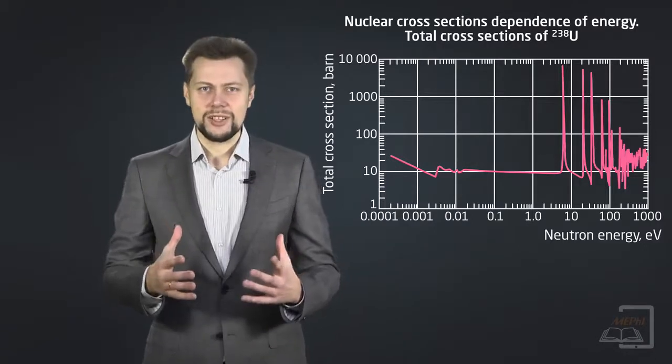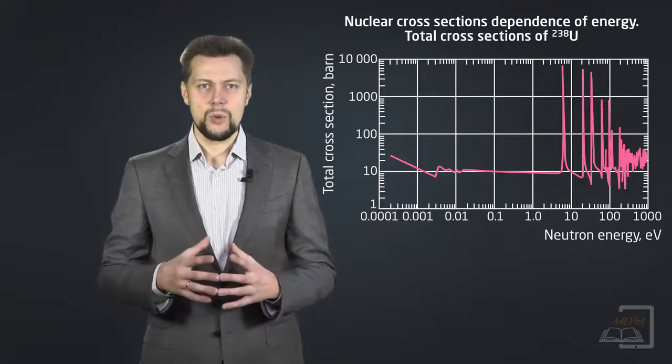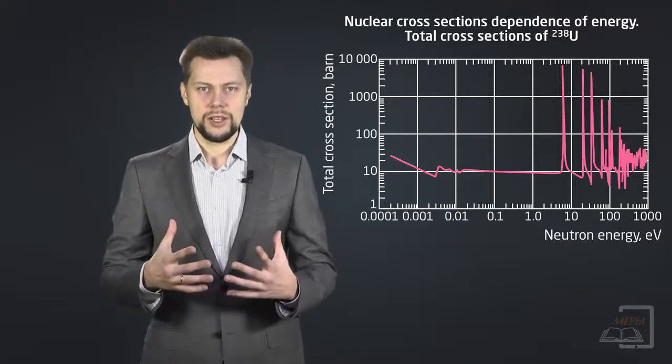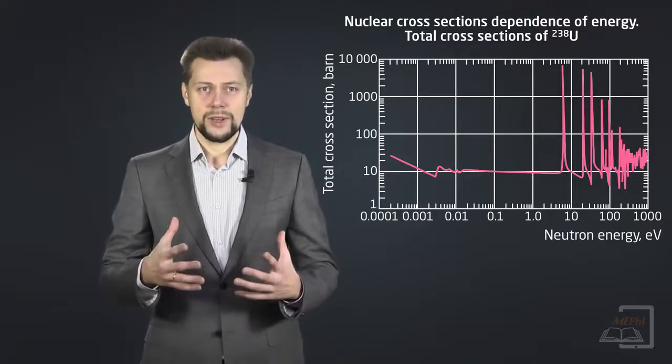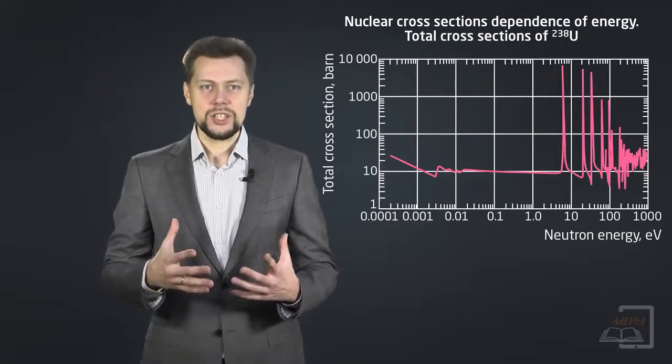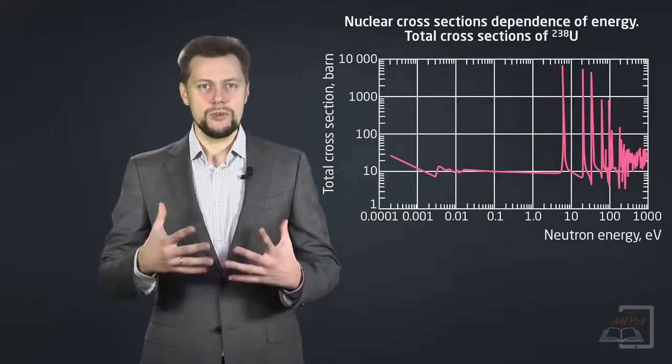The total cross-section varies in inverse proportion to the square root of the neutron energy. And as this energy of kinetic nature, the cross-section is inversely proportional to the speed of neutrons.